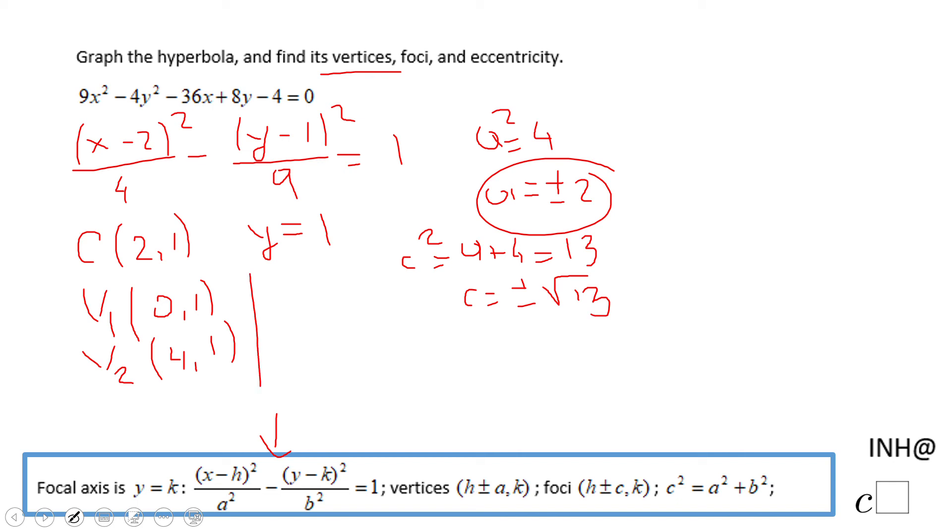So the foci are going to be, the first one, we're going to move √13 units left from (2, 1), so that will be (2 - √13, 1).